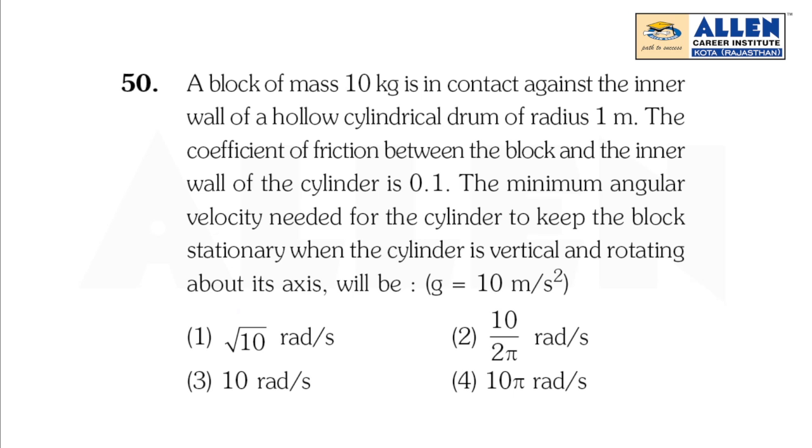The coefficient of friction between the block and the inner wall of the cylinder is 0.1. The minimum angular velocity needed for the cylinder to keep the block stationary when the cylinder is vertical and rotating about its axis will be...